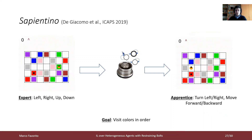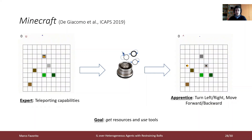We also tried the approach on the Sapientino environment. The task for the robot is to visit some colors in a certain order, and the fluents capture the robot's visits to colored cells. The expert agent was able to move left, right, up, and down, whereas the apprentice agent can turn left, right, or move forward and backward. In the last example, we used a Minecraft-like environment. The goal is to get resources and use tools to accomplish a sequential task, and the fluents describe the resources obtained or tools used. The expert has teleporting capabilities, whereas the apprentice can only move through the grid.